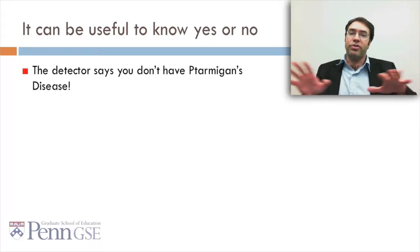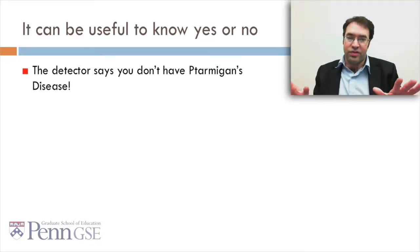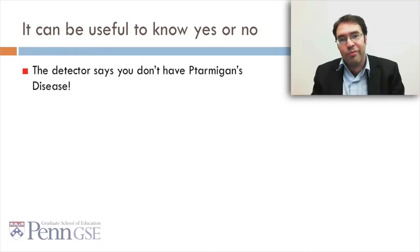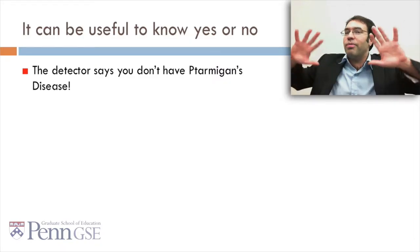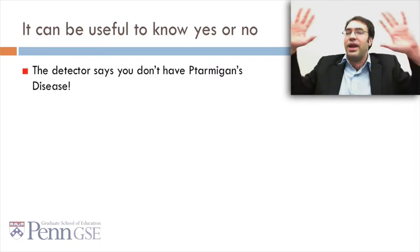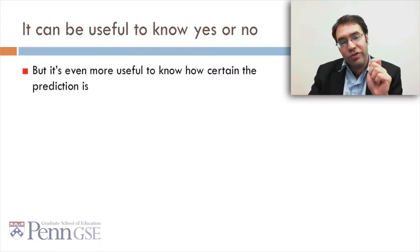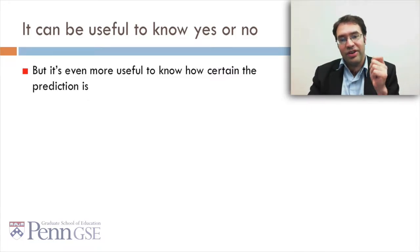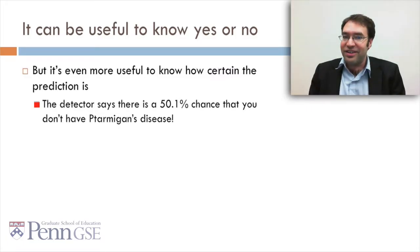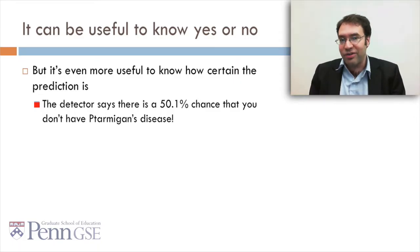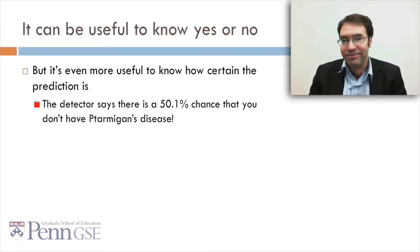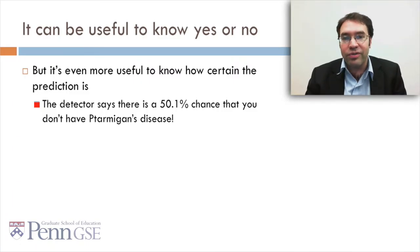For example, let's say you go to the Ptarmigan's disease detector and the detector says you don't have Ptarmigan's disease. Now you can throw a big party and be happy. But it's even more useful to know how certain the prediction is. Let's say the detector says there's a 50.1% chance that you don't have Ptarmigan's disease — are you still celebrating? Not once you know the confidence. That's why confidences matter.